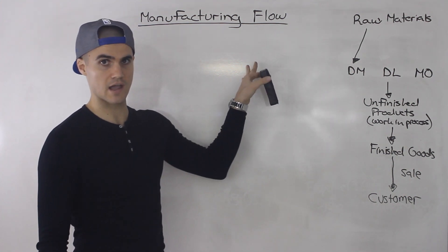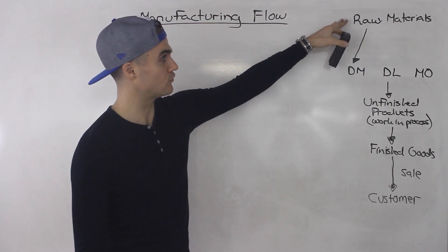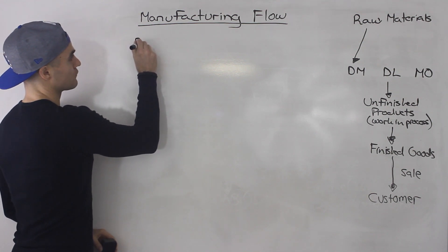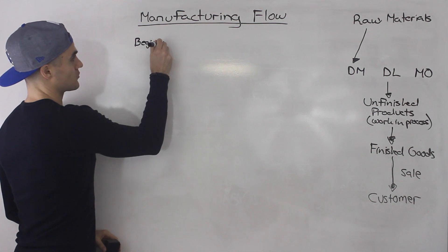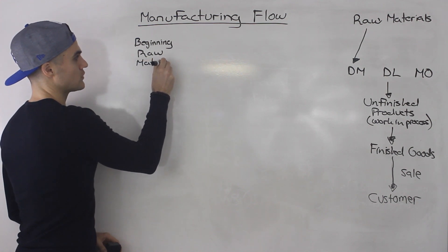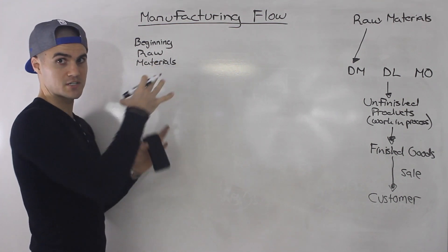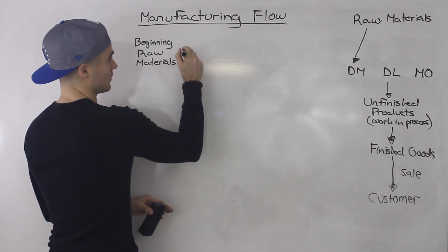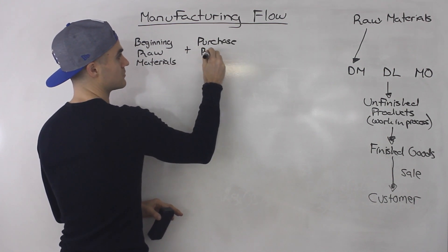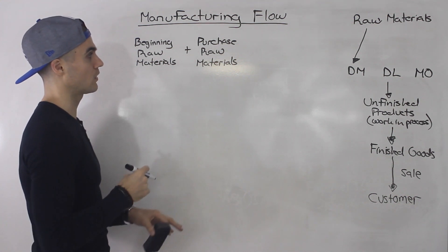Now I'm going to go over each of these steps in more detail. Let's start with the flow from raw materials to direct materials. What's going to happen is you start off maybe having some raw materials at the beginning of the period — beginning raw materials — that you still haven't used for production but have on hand because you purchased them before. Then on top of those, you're going to purchase some additional raw materials within the period you're looking at.